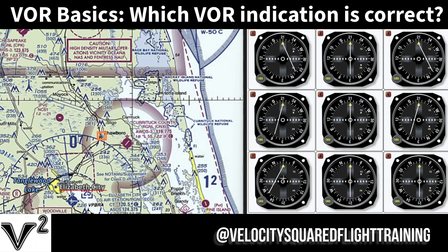So now we've got to figure out which radial we're on for the Elizabeth City VOR. The way you're going to do that — I'll use some green for this VOR — is you just draw the radial coming out. I'll use yellow: yellow coming out to Shawboro, and we know we're right about there.